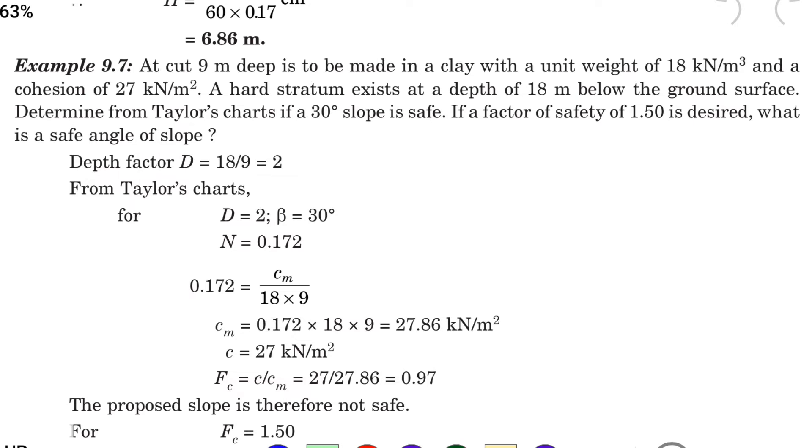A hard stratum exists at the depth of 18 meter below the ground surface. Then determine from the Taylor's chart if a 30 degree slope is safe. If the factor of safety of 1.5 is desired, what is the angle of slope.